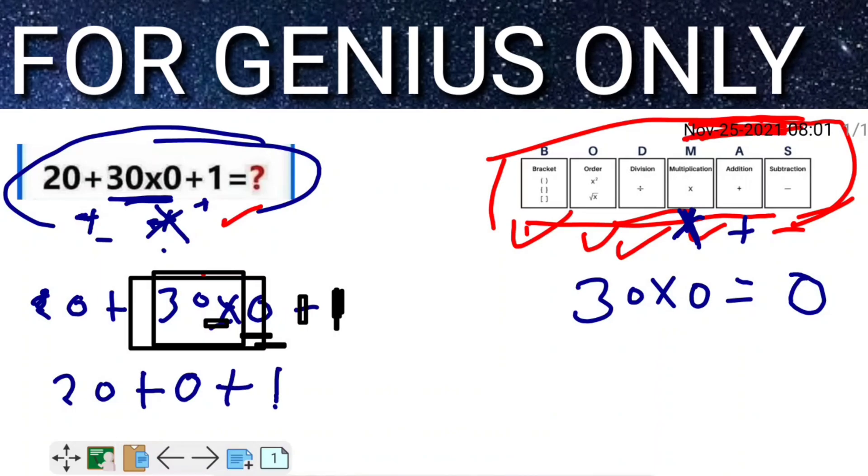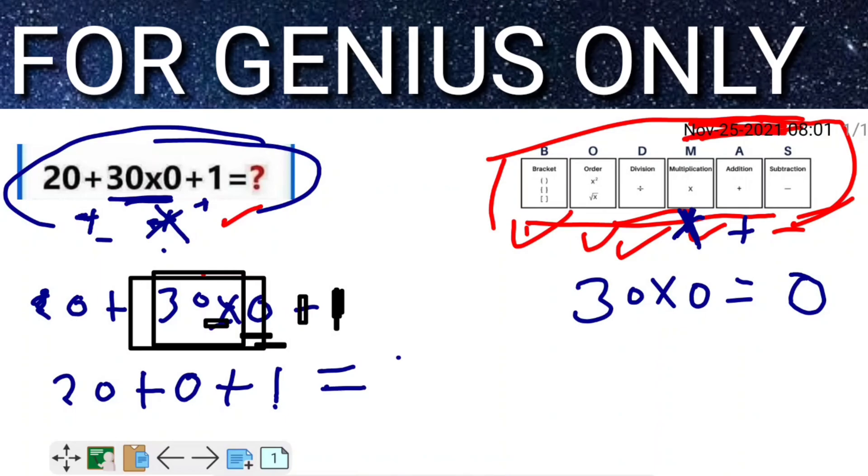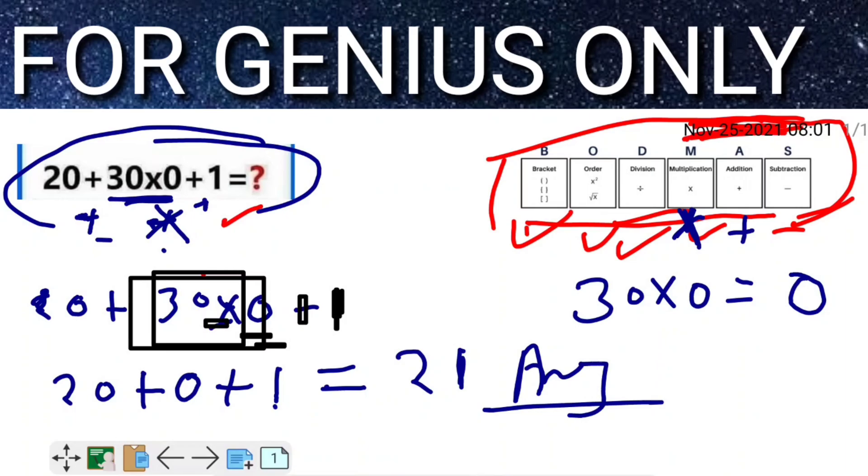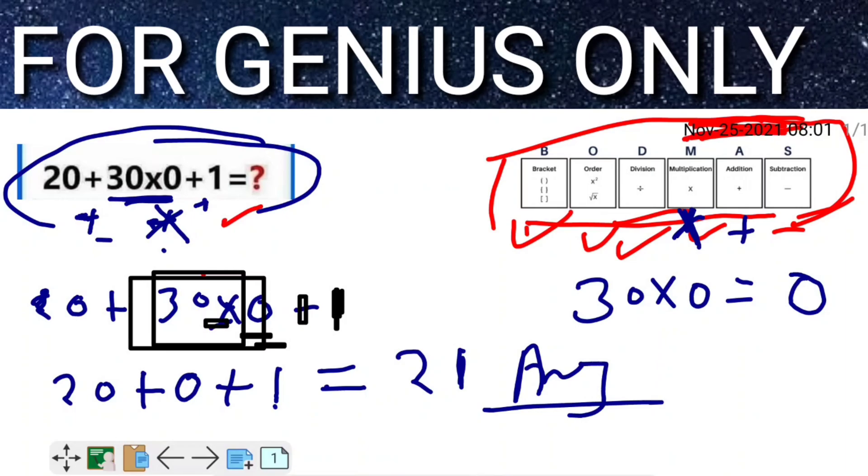So we have 20 + 0 + 1, and the answer is 21. I hope you understand how I solved this equation.